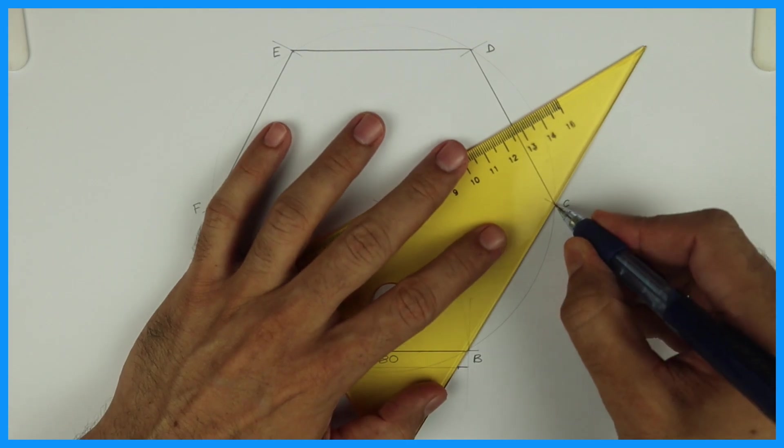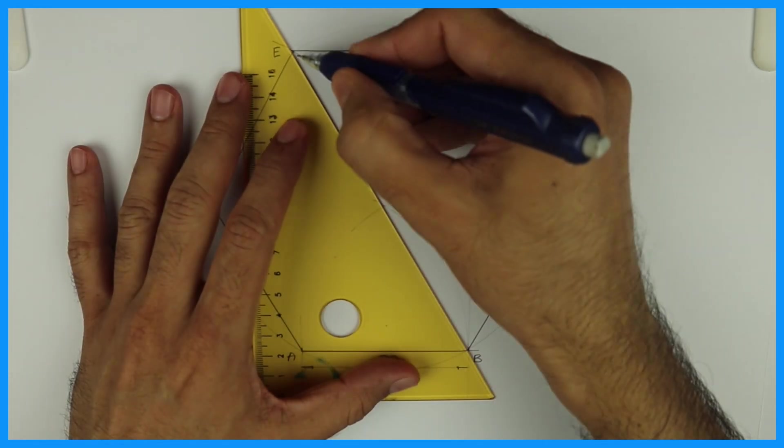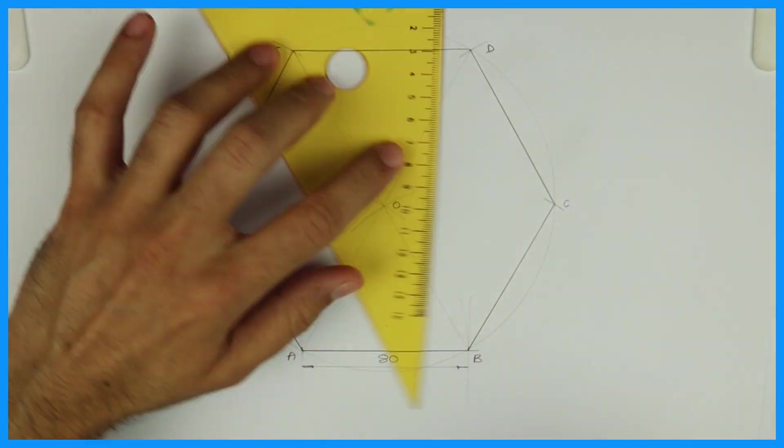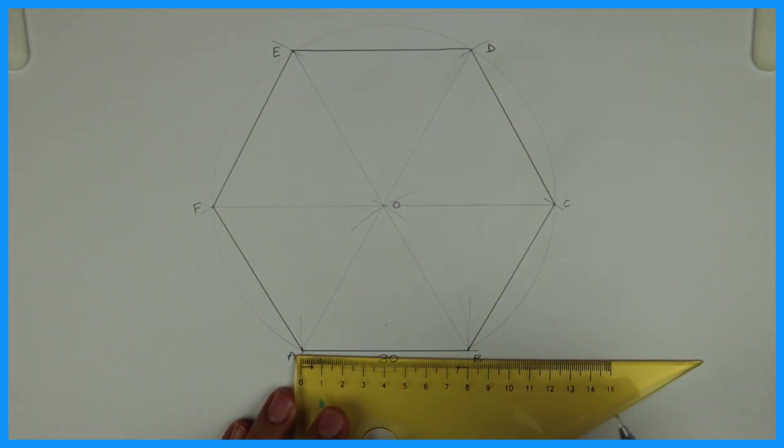Now we need to draw six circles inside this. First, we will draw diagonals from opposite corners. Join like this, so we'll get six equal triangles inside the hexagon.